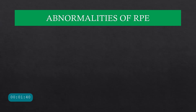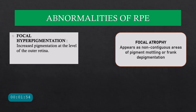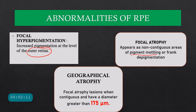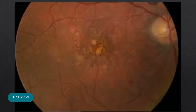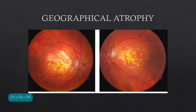There can be RPE abnormalities seen in ARMD clinically: focal hyperpigmentation, where increased pigmentation is seen at the level of the outer retina appreciable on OCT, and depigmentation or focal atrophy, seen as pigment mottling or frank depigmentation. When this focal atrophy extends to a diameter of about 175 micrometers, it is referred to as geographical atrophy, which is the hallmark of dry ARMD. Certain depigmented areas are visible on fundus examination, sometimes with underlying choroidal vessels visible through the area of RPE loss.